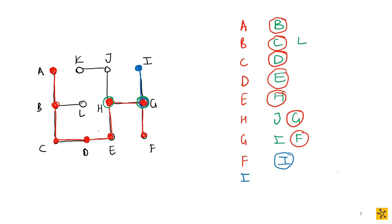Back at H, the remaining adjacent inactive vertex is J, so we activate J. Then from J we activate K. K has no more inactive adjacent vertices, so we backtrack: J, then H, then E, then D, then C, then B — and from B we can finally activate L. And then we are done.